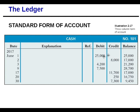For example, account number 101 for cash would be used as a reference every time you book a cash transaction in the journal. Then the reference in the ledger comes from the journal page — page one, two, three, or four — so you can trace back and double-check if needed. Then you have debit and credit columns. Whatever debits and credits appear in the journal, just transfer them as-is to the respective ledger account.